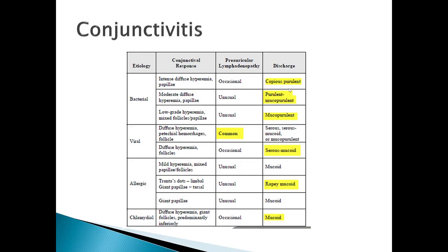Here's a summary table of the types of conjunctivitis. Bacterial usually has copious purulent to mucopurulent discharge. Viral is typically bilateral, starts in one eye and moves to the other within a couple of days, and has preauricular lymphadenopathy not seen in other types, with a serous mucoid discharge. Allergic conjunctivitis has papillae on the underneath side, potentially some follicles, and a ropy mucoid appearance. Chlamydial conjunctivitis has a mucoid appearance.